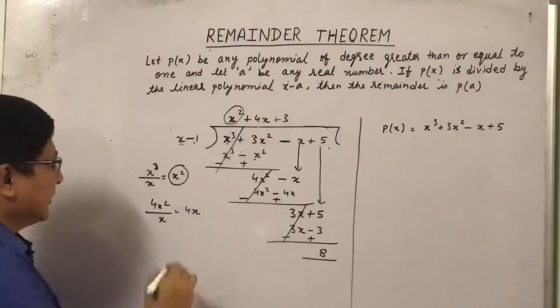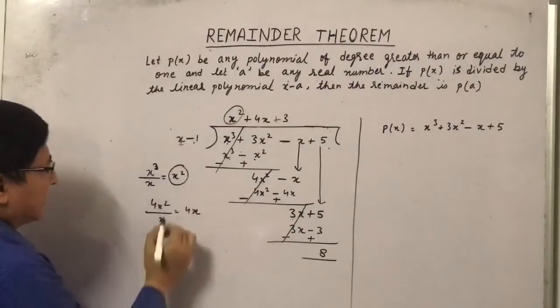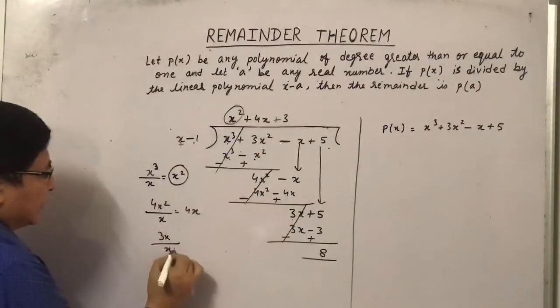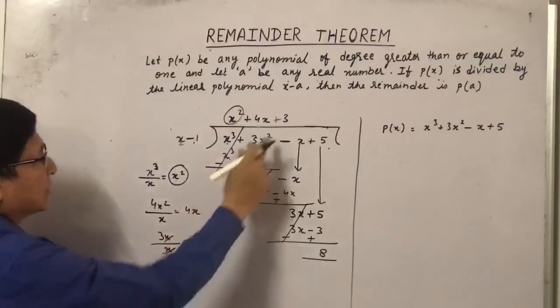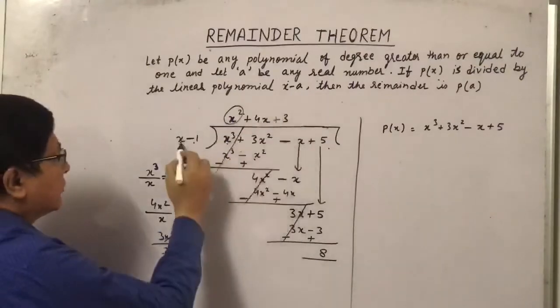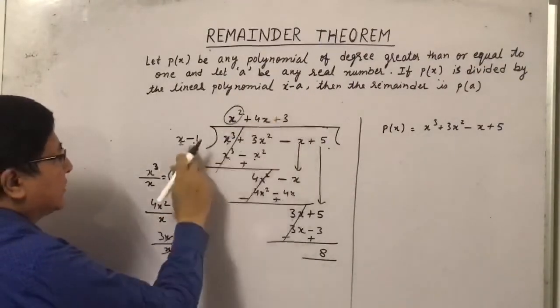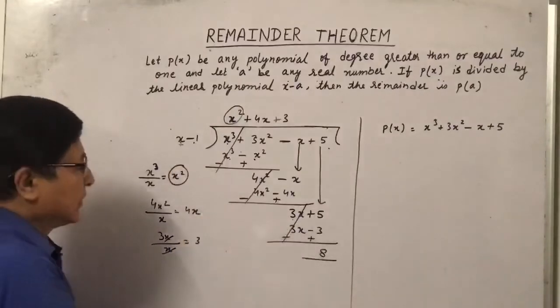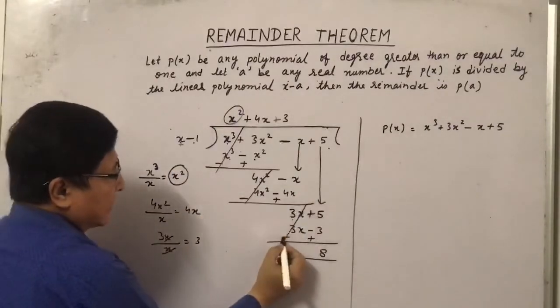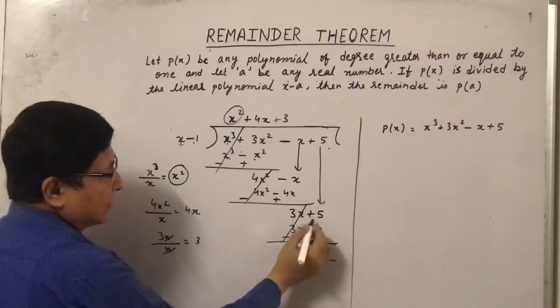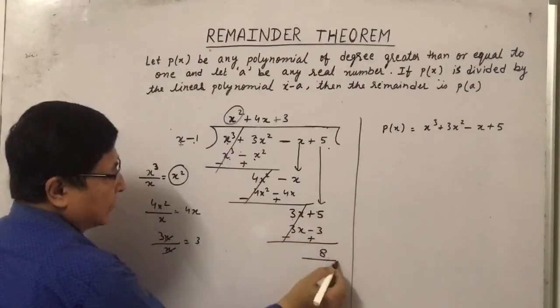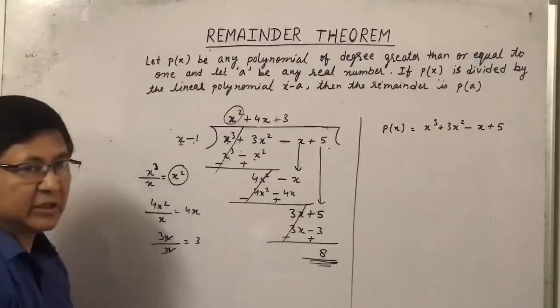Now 3 x will be divided by x, so it will cancel and it will form 3, so I have written 3 here. So 3 into x is 3 x and 3 into minus 1 is minus 3. So now we will change the sign by subtracting, this will cancel and 5 plus 3 will become 8, so the remainder is 8.